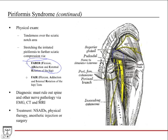For diagnosis, you need to rule out spine and other nerve pathology via EMG, CT scan, or MRI. An EMG will tell you where along the nerve the problem is, while CT and MRI give a good look at the bones, discs, and ligament structures in the spine and hips. Treatment options include NSAIDs for pain relief, physical therapy, an anesthetic injection to calm things down, or surgery if the condition is severe.